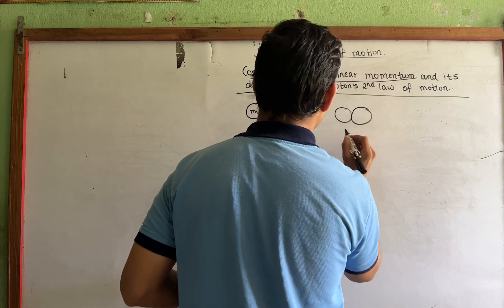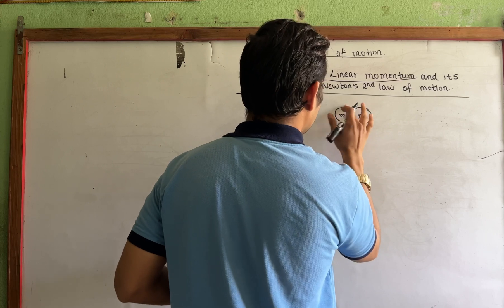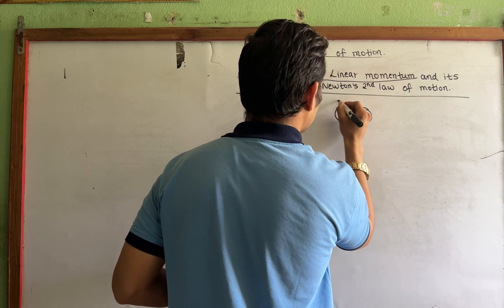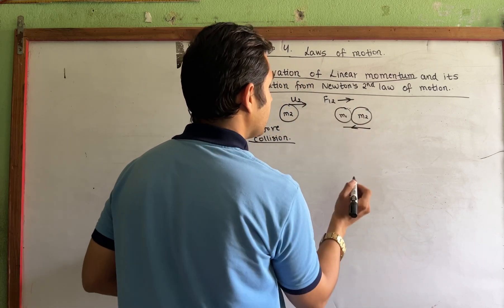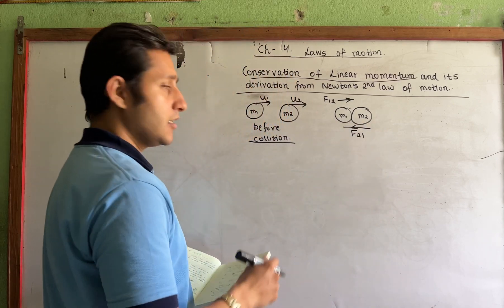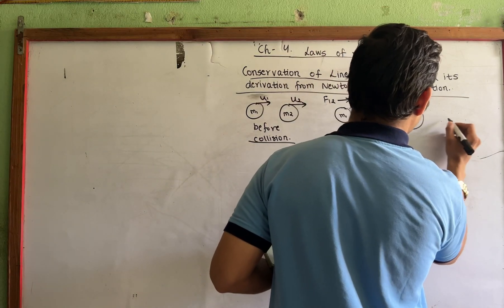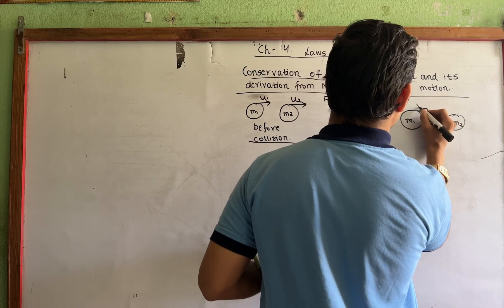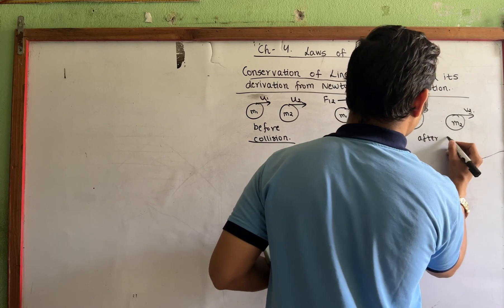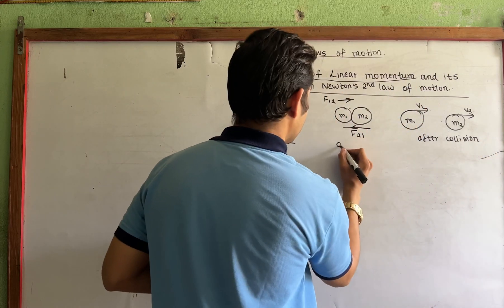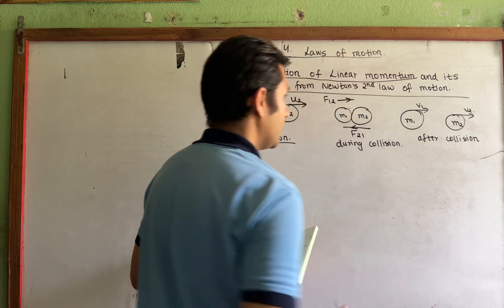M1 and M2 with velocities U1 and U2 — this is before collision. M1 and M2, this is before collision. M1, M2, F1, F2. F1 and F2. After collision: M1 and M2 with velocities V1 and V2 — this is after collision. This is during collision.